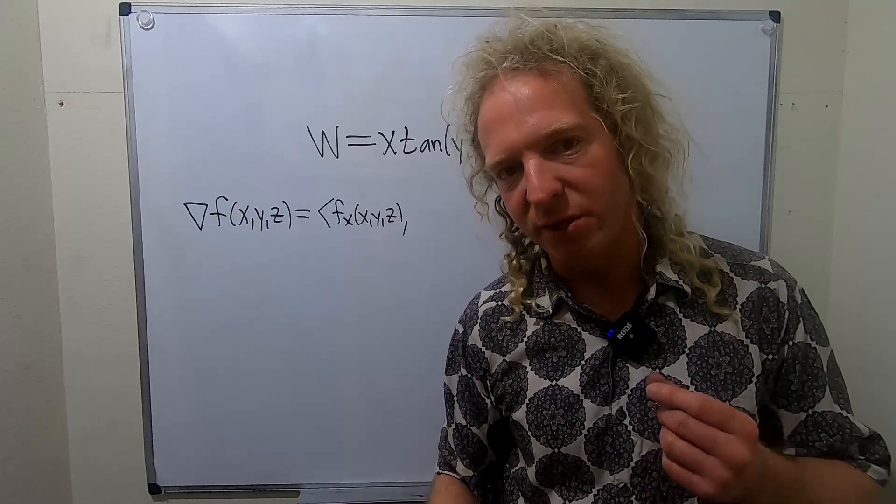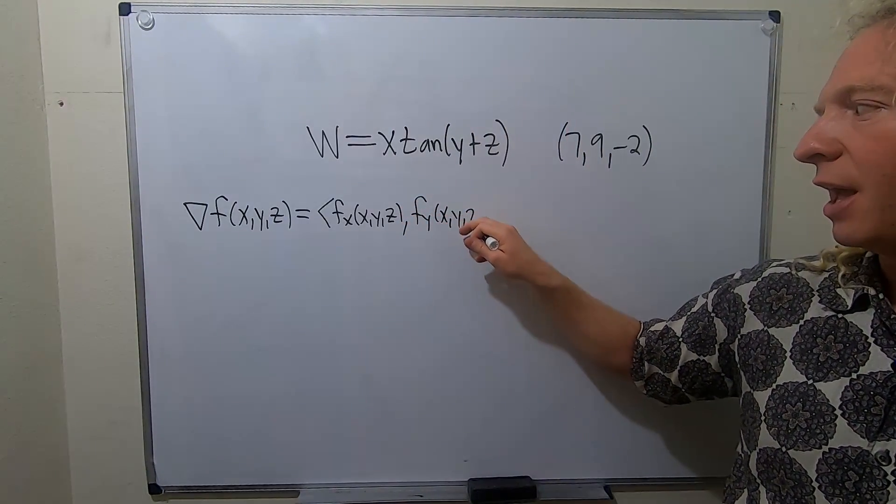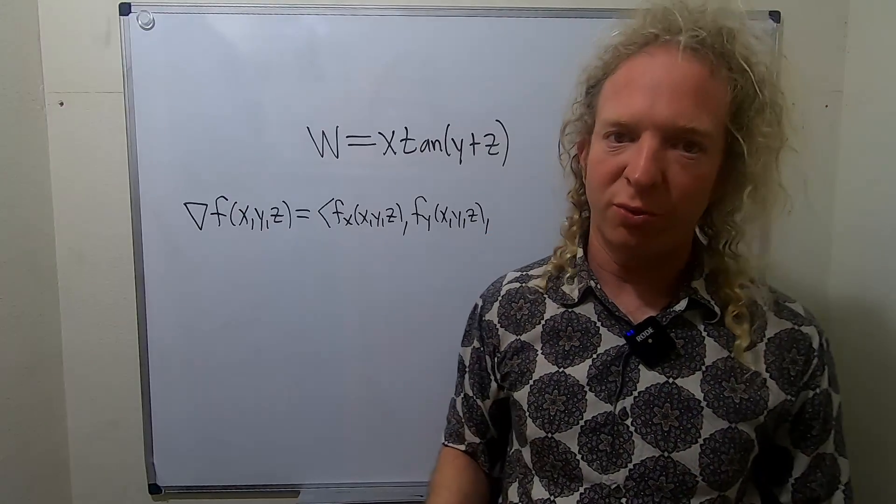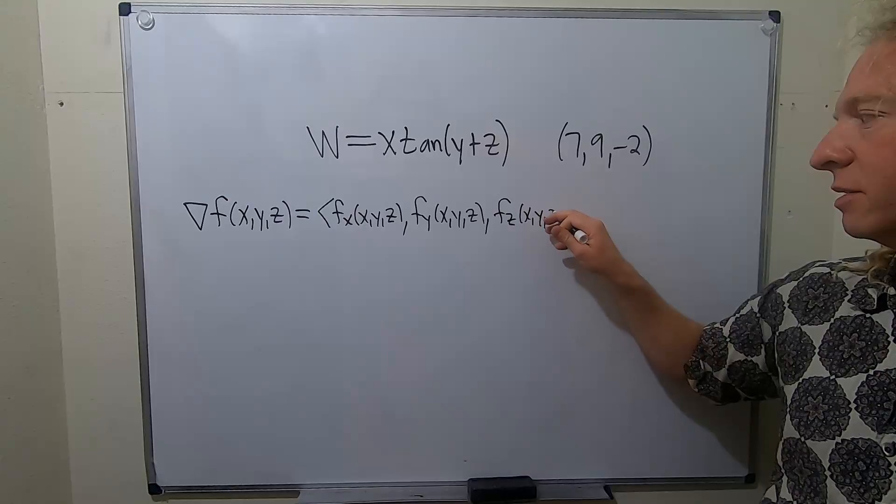The second component is the partial with respect to y, so fy at x, y, z. And the third component is the partial with respect to z, fz at x, y, z.